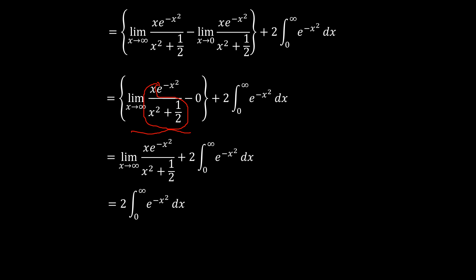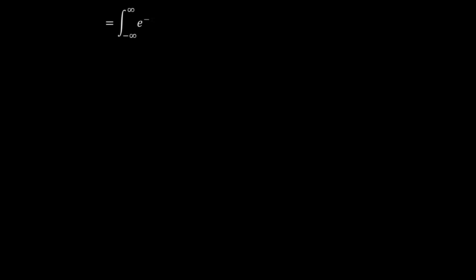This is the well-known Gaussian integral — it is the positive half of a complete Gaussian curve, so it equals one half of the full integral from negative infinity to positive infinity of e to the power negative x squared. That factor of one half cancels with the factor of 2, giving us the full integral from negative infinity to positive infinity of e to the power negative x squared, which is definitively equal to the square root of pi. That is our answer.